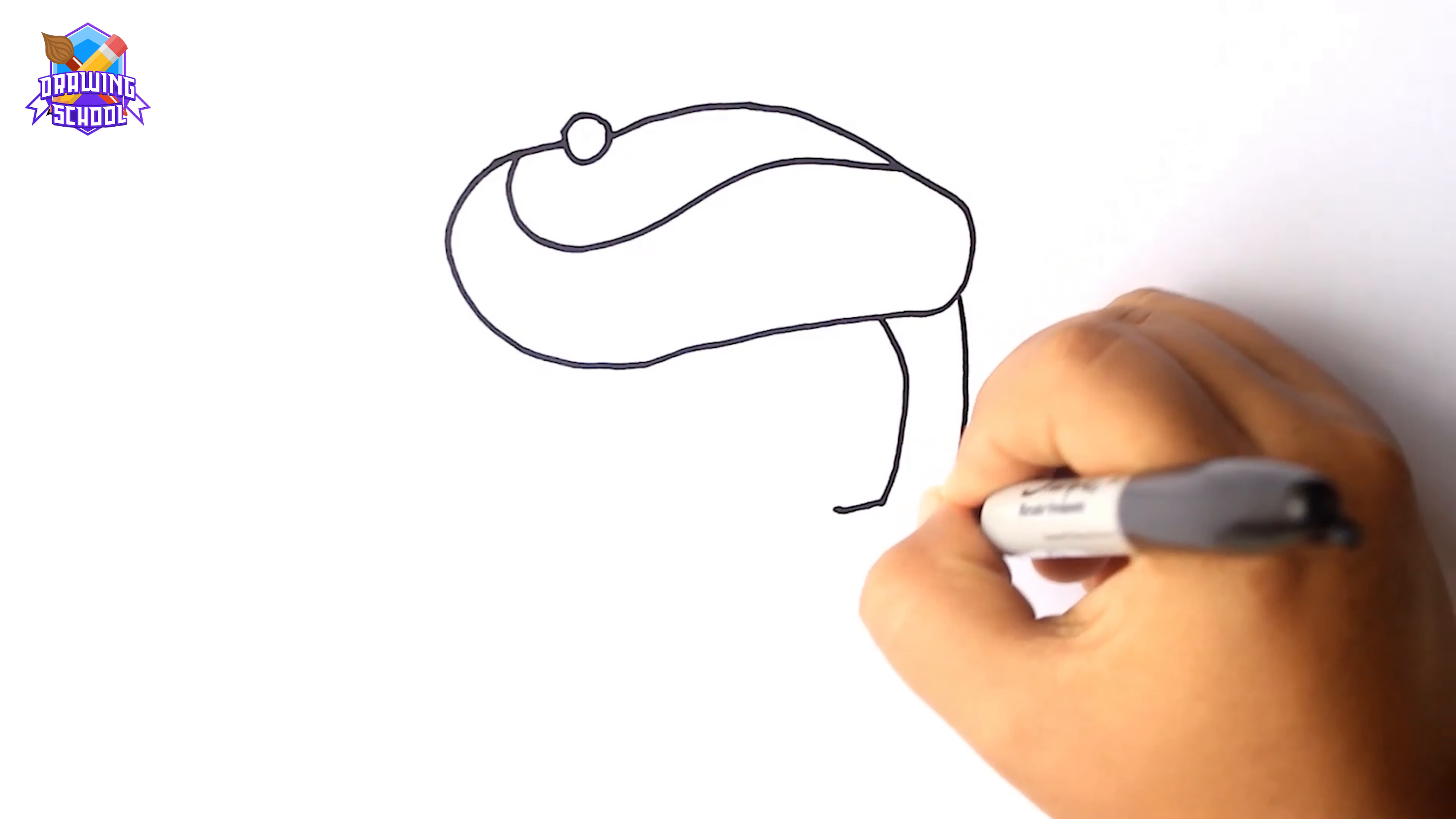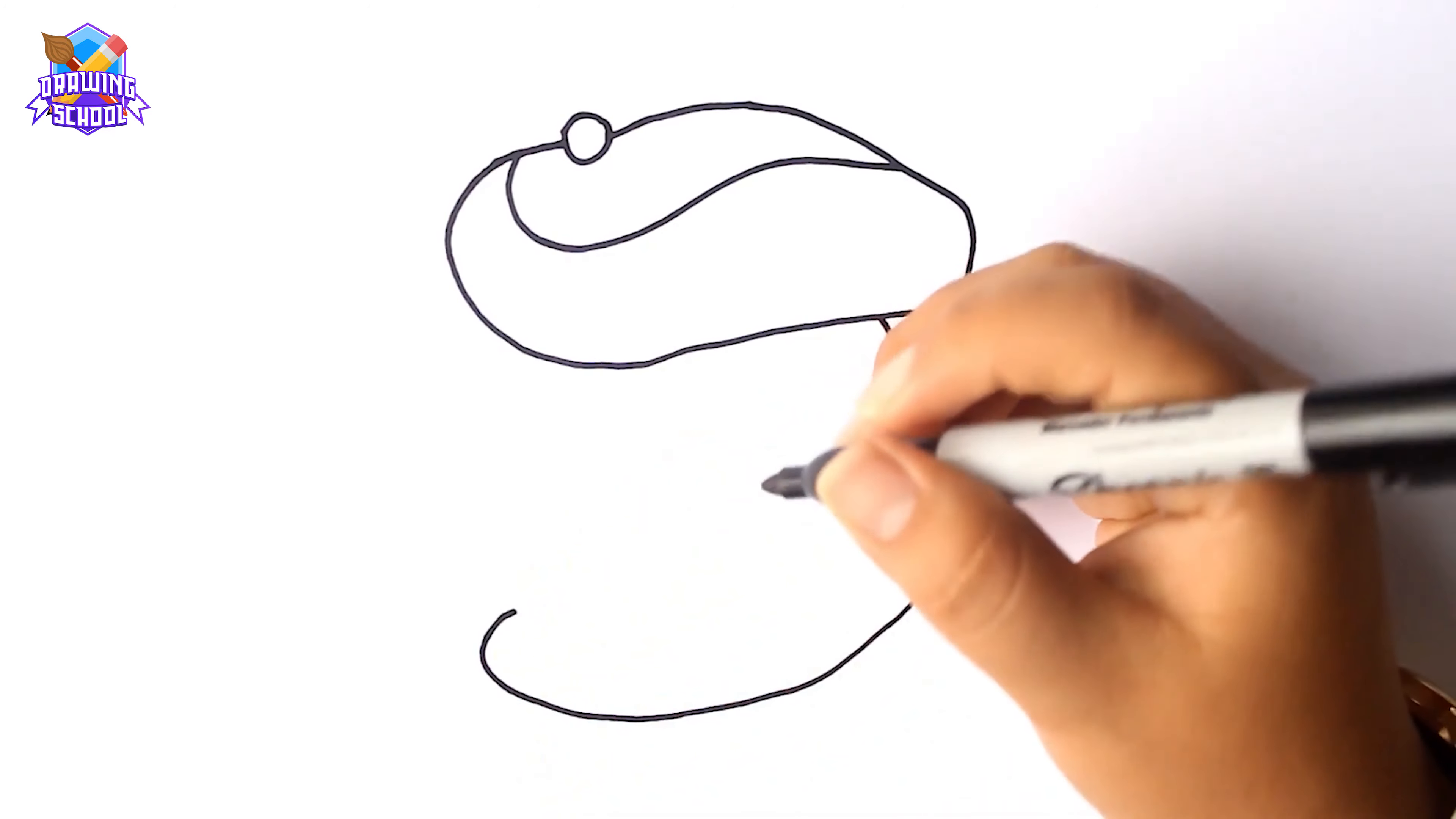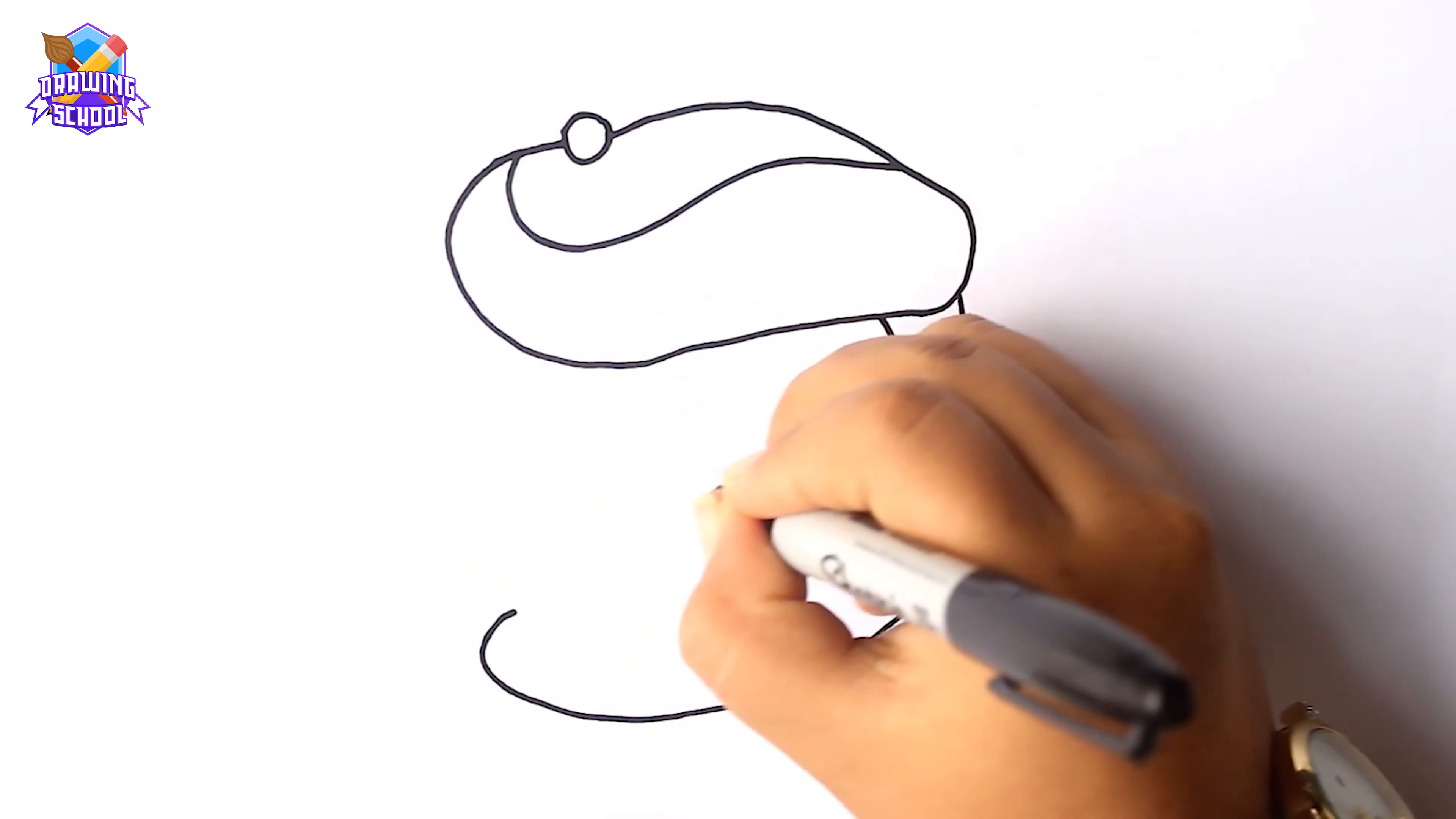We draw a line going down and left like this. And now we draw another one. Here we draw the bowl.